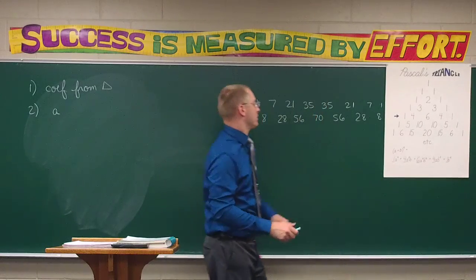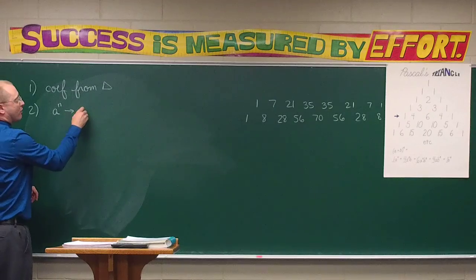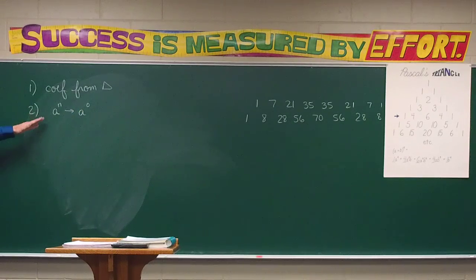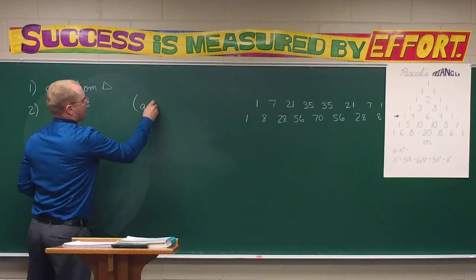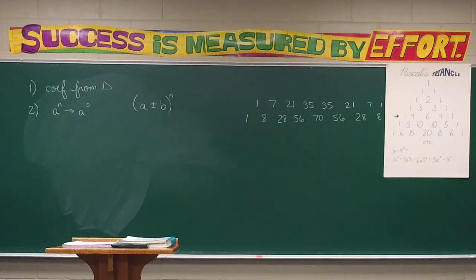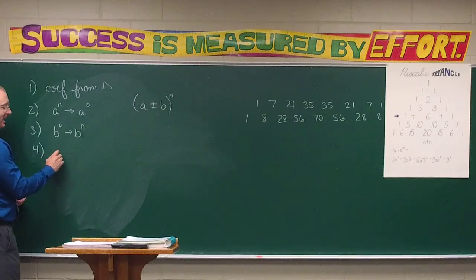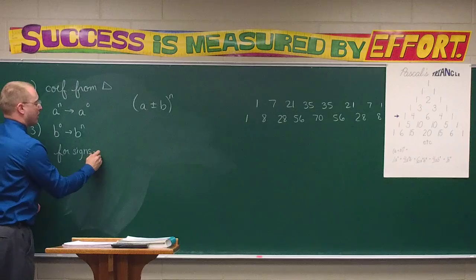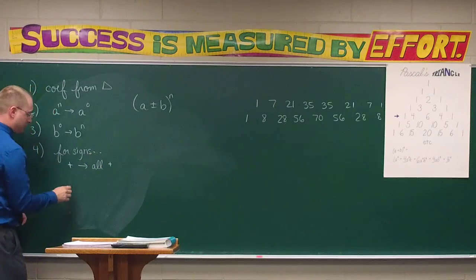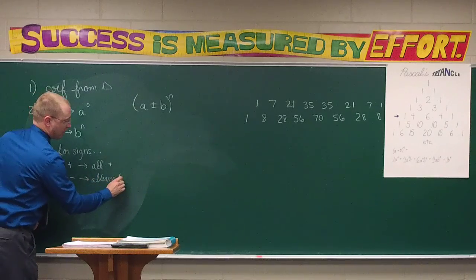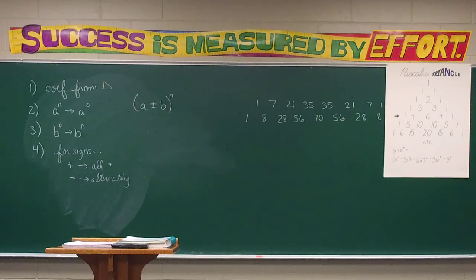Step one: coefficients from Pascal's triangle. Step two: you're going to start with a — which is how we'll describe our first term — start it to the nth power and go down to a to the zero. This is for a plus or minus b to the n. The a starts at the nth power and descends. Step three: the b is going to start at the zero power and ascend up to the nth power.